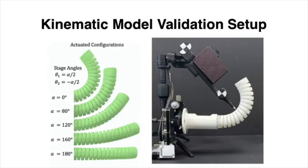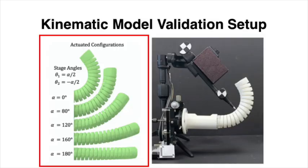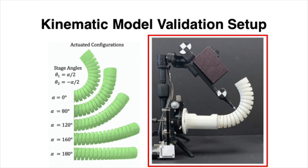To validate the accuracy of the full kinematic model, we actuate the bellows pair by equal angles in opposite directions from the fully pre-curved position to almost completely straight. A stereoscopic camera, along with a stylus pointer, were used to measure shape data of the actuated configurations.